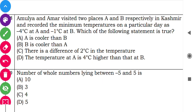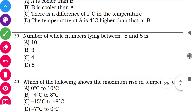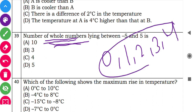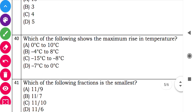Question 39: 'Number of whole numbers lying between minus 5 and 5.' Note: whole numbers, not integers. Whole numbers between minus 5 and 5 are: 0, 1, 2, 3, and 4. So there are 5 whole numbers. Question 40: 'Which of the following shows the maximum rise in temperature?' Looking at the options, B shows a rise of 12 degrees centigrade, which is the maximum.